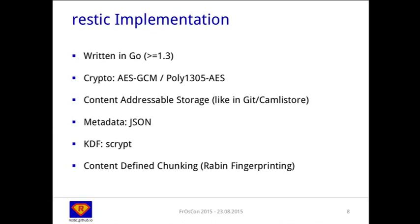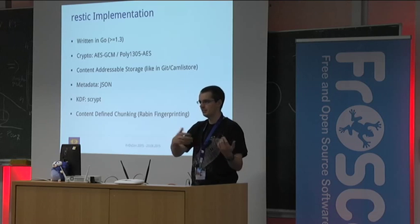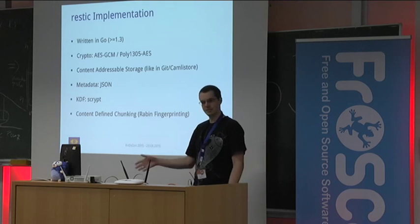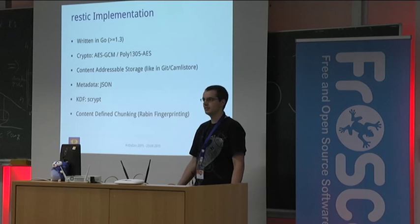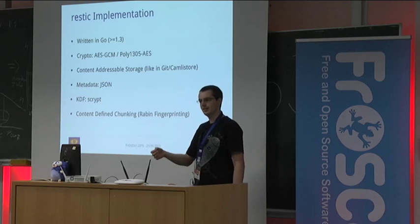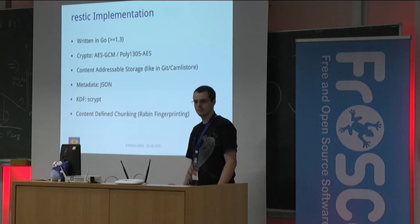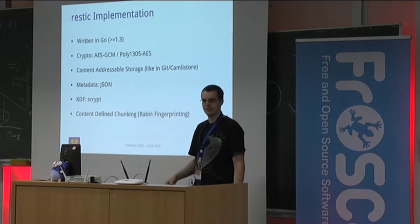One idea from those systems is content-addressable storage — the address for storing a chunk of data is the SHA-2 sum of the data itself. We'll see that in a moment. For metadata like directory structures and filenames, we use JSON. It's not an obvious choice for a backup system, but we found it was fast enough, and JSON is really extendable — if new fields are present in a later version of the repository, an older version of RESTIC can still read it because unknown fields are just ignored.